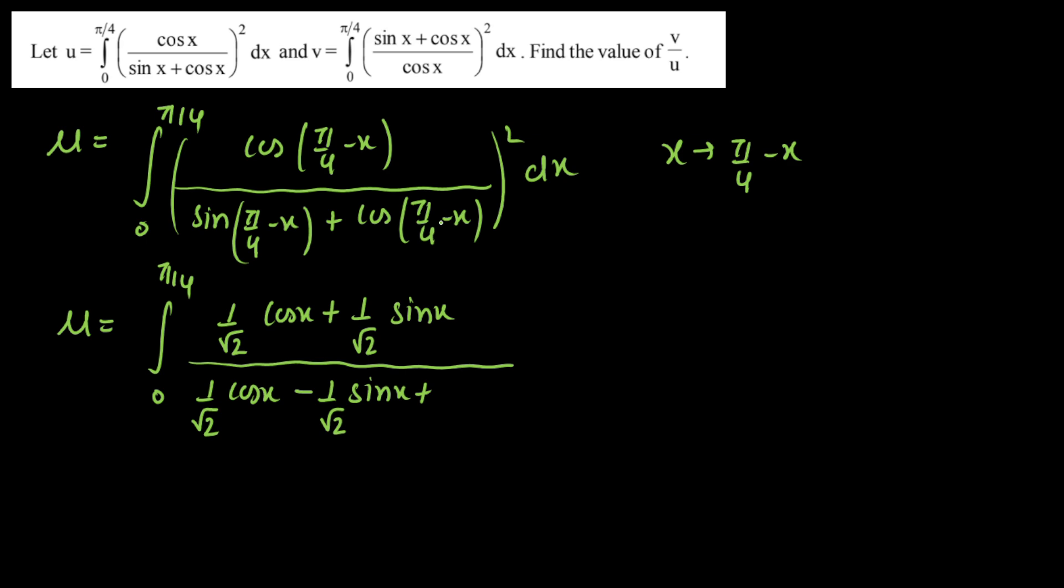Similarly, this will be opened as cos A cos B plus sin A sin B. That will be 1/√2 cos x, and then 1/√2 sin x, and the whole square. Now as you can see, this minus 1/√2 sin x and plus 1/√2 sin x will cancel out immediately.